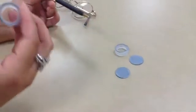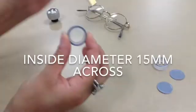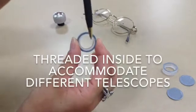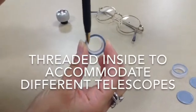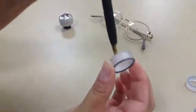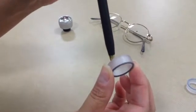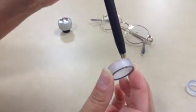Now the inside diameter of the Telescope Mounting Adapter is 15mm across, and on the inside you'll see that it is threaded, and that is designed to accommodate a number of different Galilean telescopes from Eschenbach.